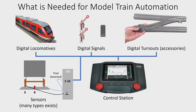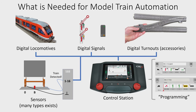You must also tell the control station how you want the layout to operate and function, so you need some sort of programming. If we're talking about the Central Station 3, the programming is actually events — it's based on events. Typically what happens is that a sensor detects that a train arrived somewhere, let's say at platform one at your main station.